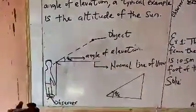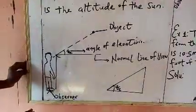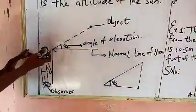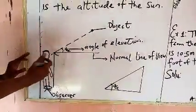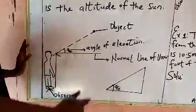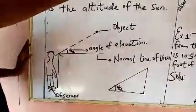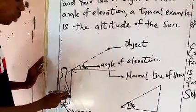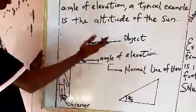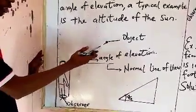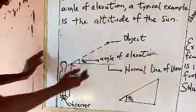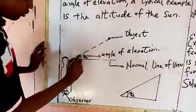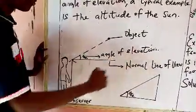To illustrate this further, let's look at this diagram. We have an observer here, and this straight line is the normal horizontal view — when you are walking you look straight, neither upwards nor downwards. And this is the object that is above the observer, so the observer has to look upward to view it. That upward view is what they call the line of sight.